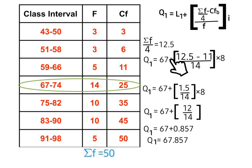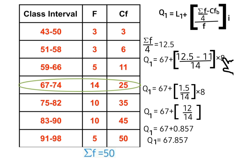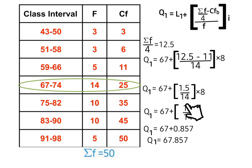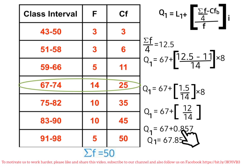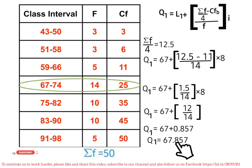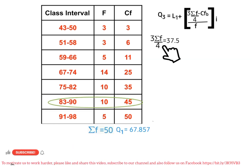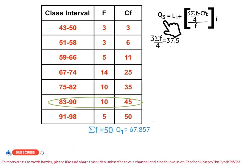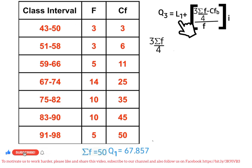So Q1 equals 67 plus (12.5 minus 11), which is 1.5, over 14, times 8. That gives 67 plus 12 over 14, which equals 0.857. So Q1 equals 67.857. The next step is to calculate the third quartile class.